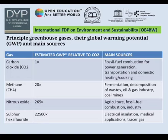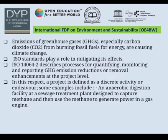In this slide, we will see about gases, their estimated global warming potential related to CO2, and their main sources. For carbon dioxide, the main sources are fossil fuel combustion for power generation, transportation, and domestic heating or cooking. For methane, sources include fermentation, decomposition of waste, oil and gas industry, and coal mines. Nitrous oxide main sources are agriculture and fossil fuel combustion industry. For sulfur hexafluoride, sources include electrical insulation, medical applications, and tracer gas. Emissions of greenhouse gases (GHGs), especially carbon dioxide from burning fossil fuels for energy, are causing climate change, and ISO standards play a very important role in mitigating its effects.